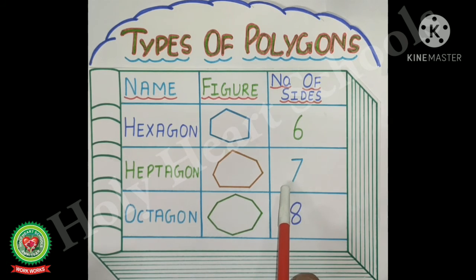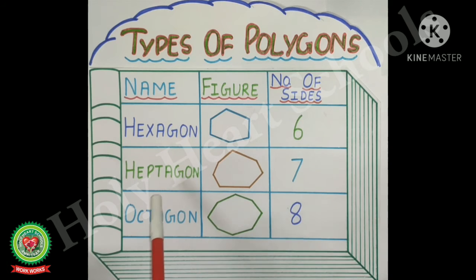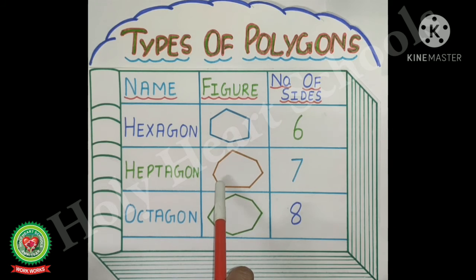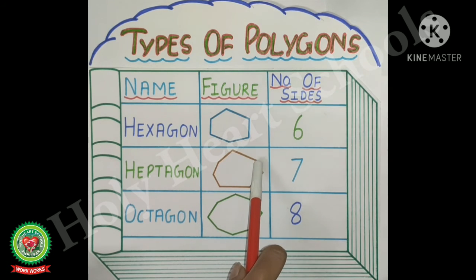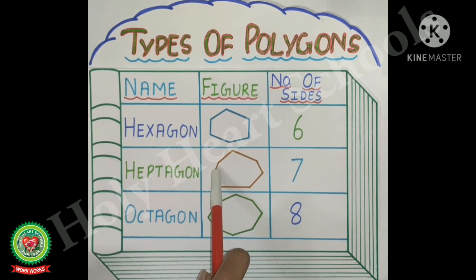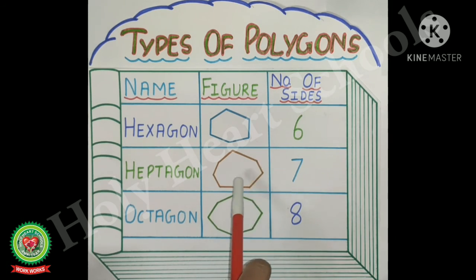The polygon which has seven sides is called a heptagon. The figure of the heptagon has one, two, three, four, five, six and seven sides. So it is called a heptagon.